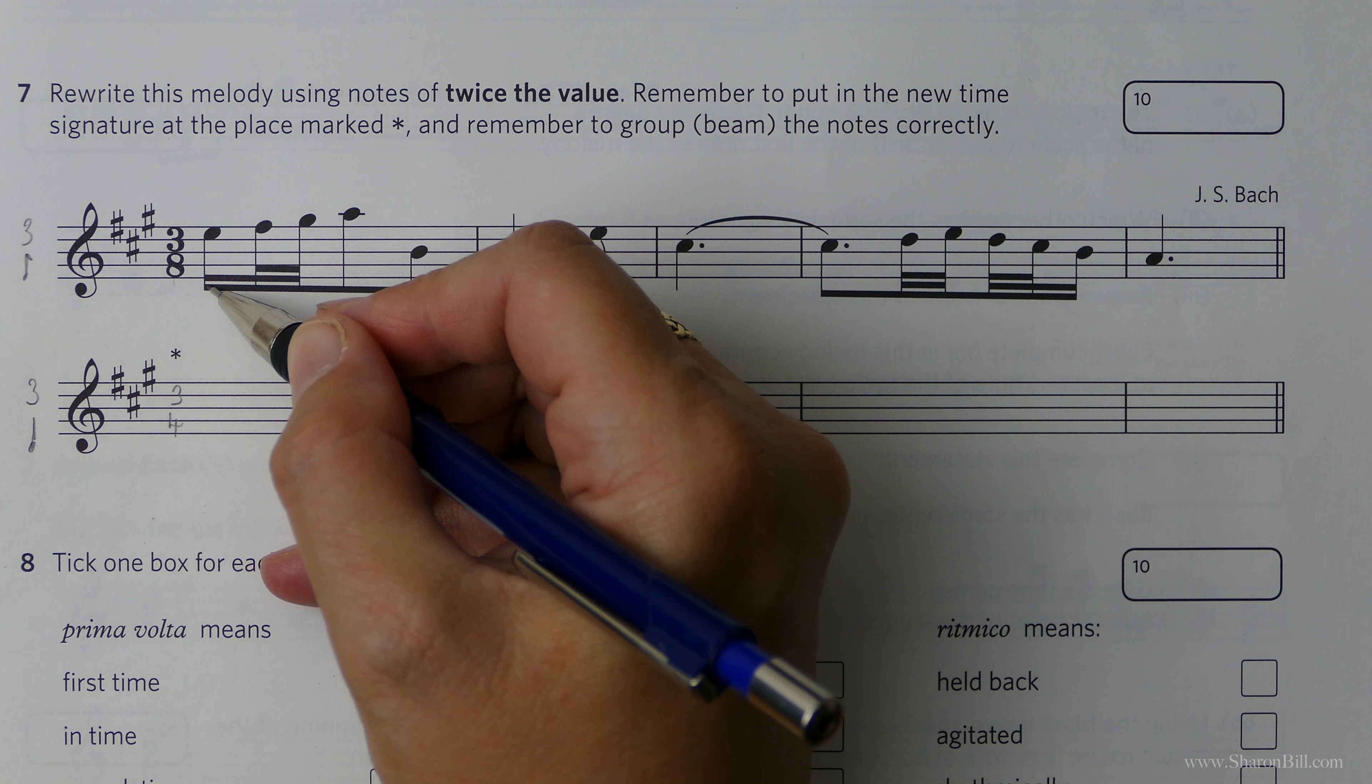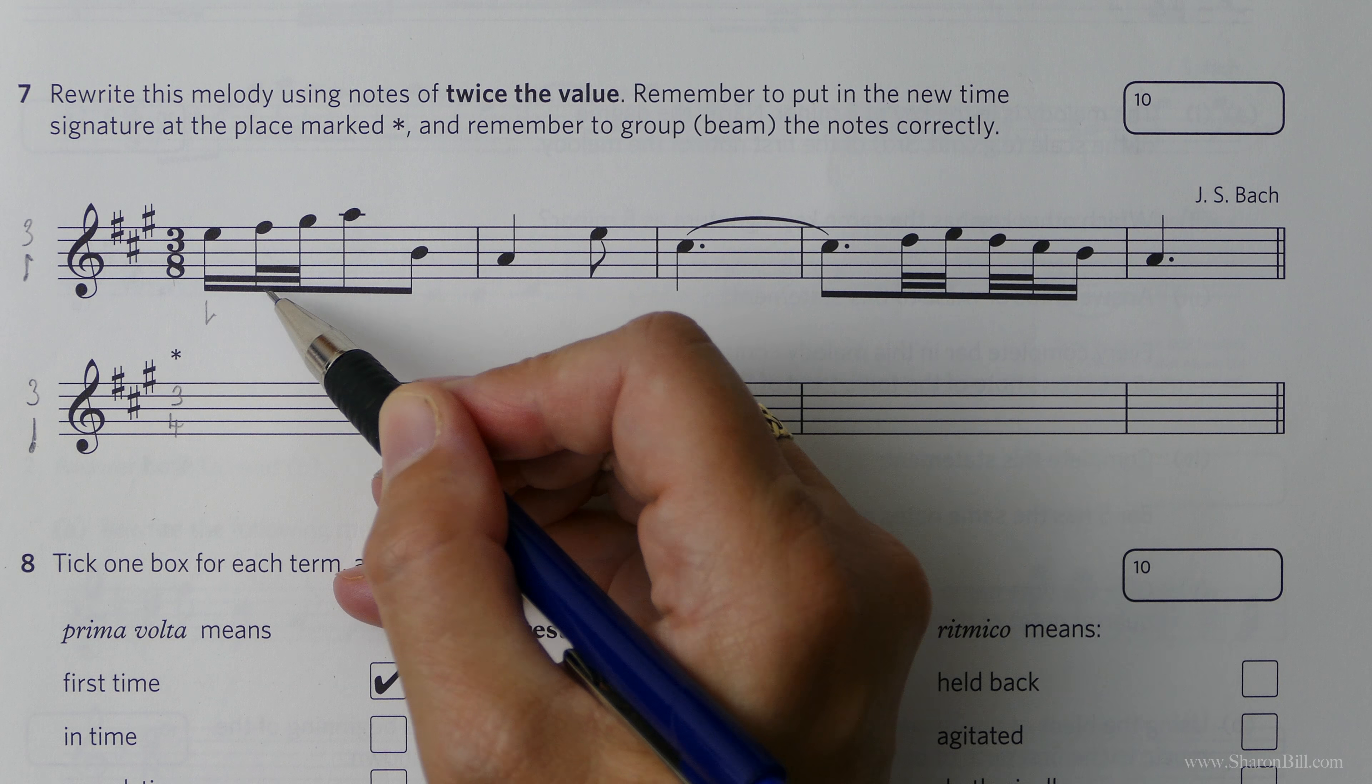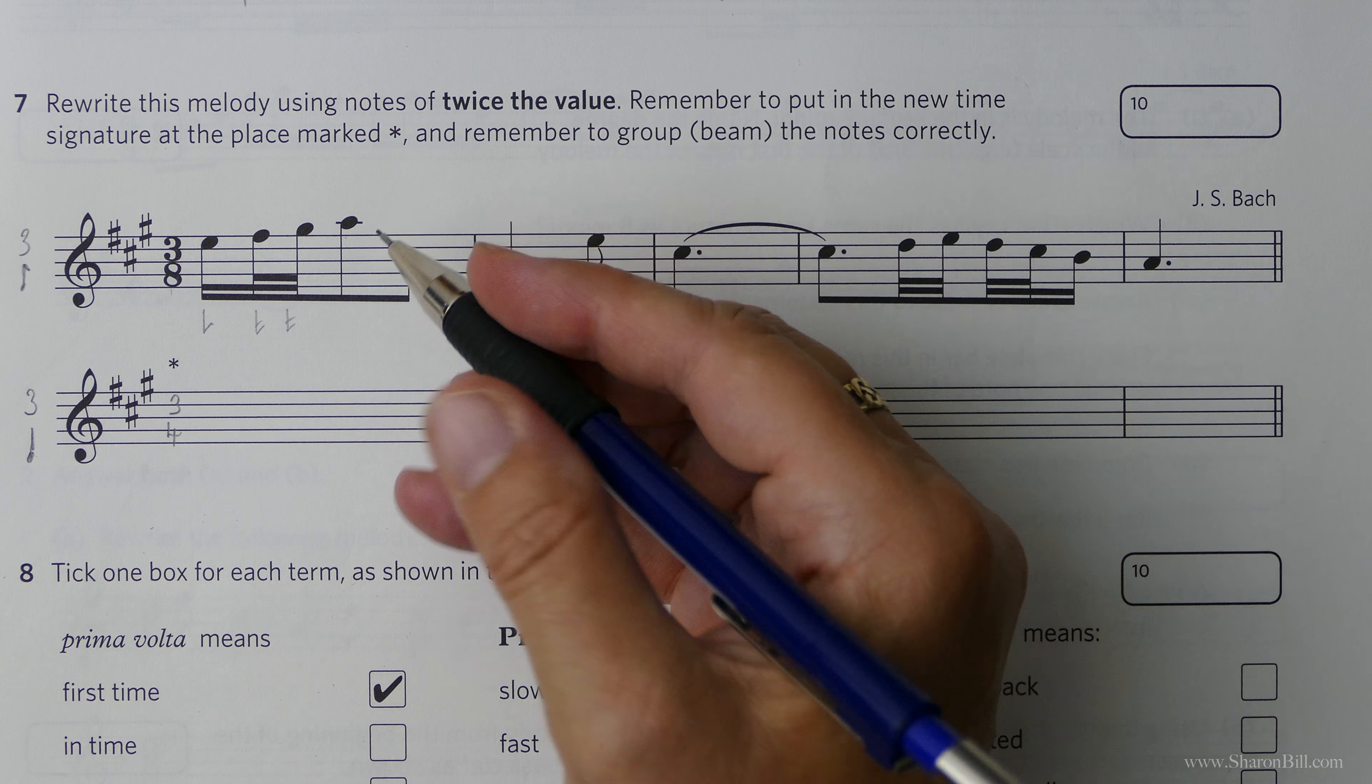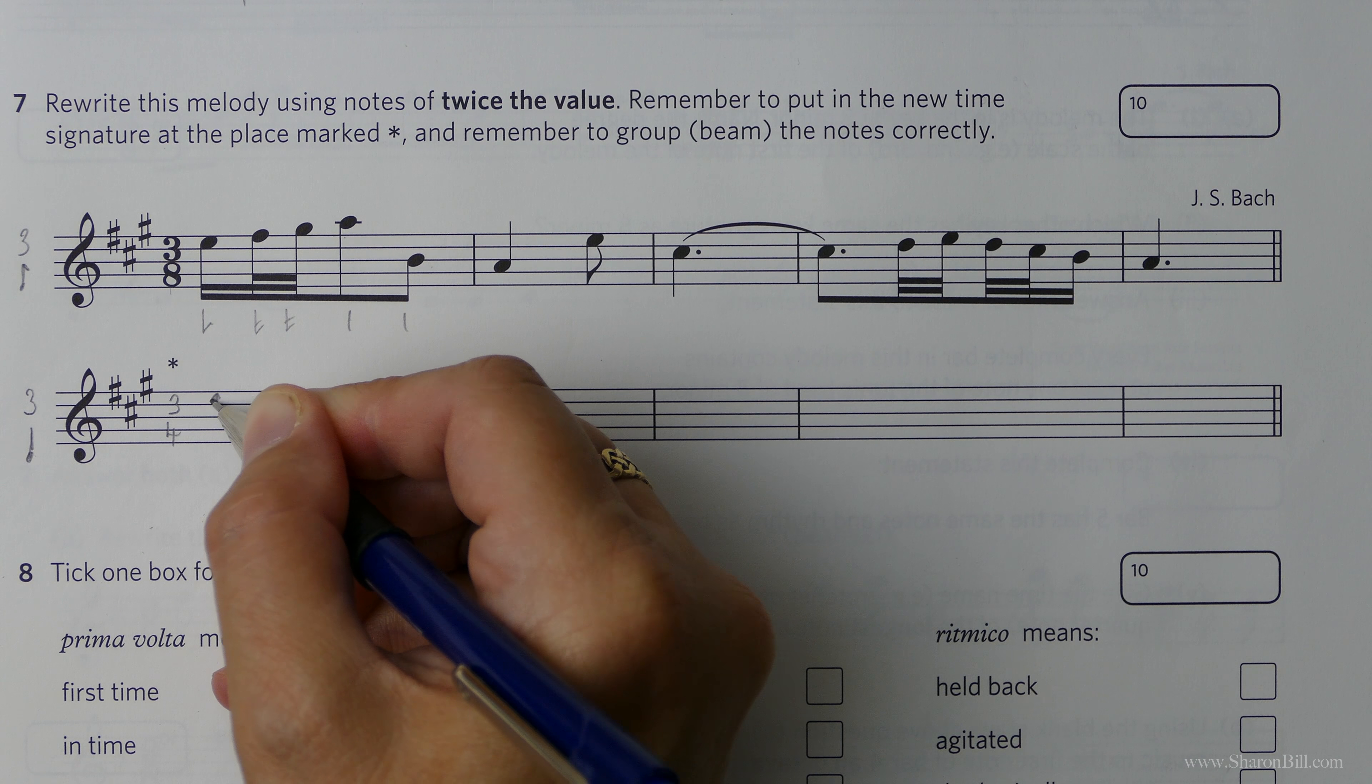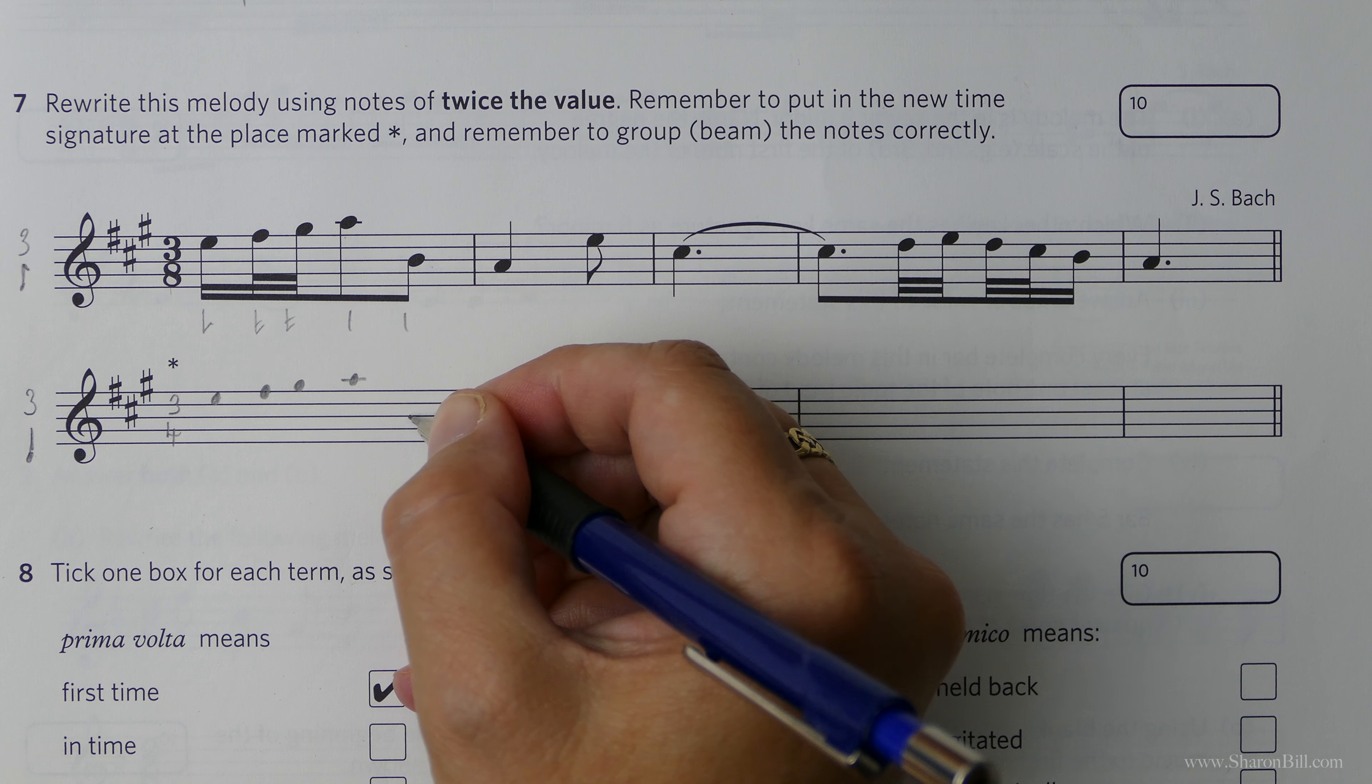Then basically we're just going to double everything. Here a semiquaver will become a quaver or an eighth note. These demi-semis, these 32nd notes will become semiquavers. And then these quavers here, to double those, will just become crotchets. I'm just going to colour in the note heads first of all. I'm keeping it aligned with what they've given me, just so I don't get lost.